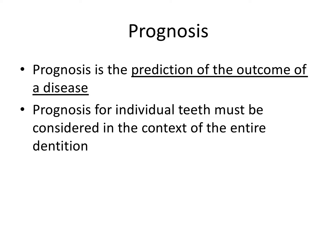Prognosis is the prediction of the outcome of a disease. Prognosis is a prediction — they both start with the letters PR, which is how I remember it. It's a prediction because we can't tell the future, but based on factors that I'll go over in this video we can assign an appropriate prognosis.